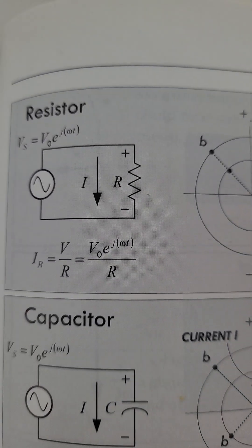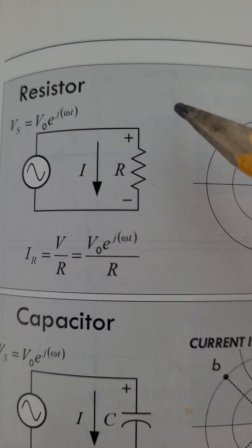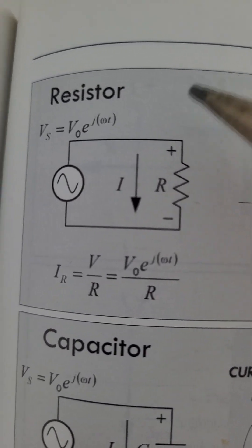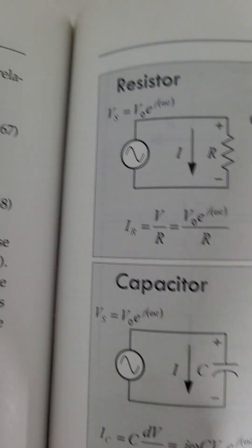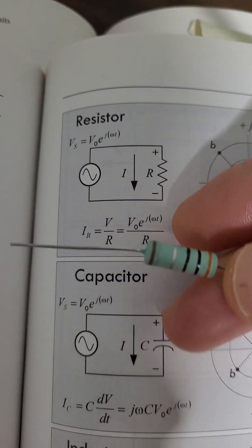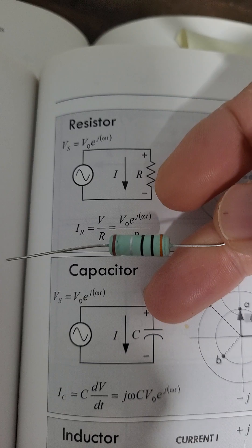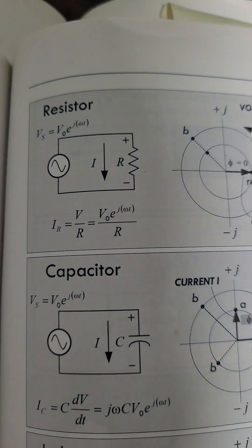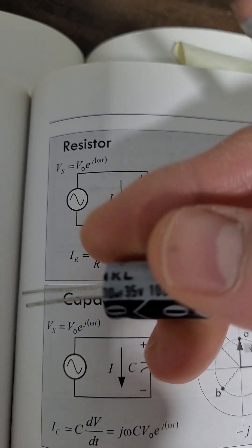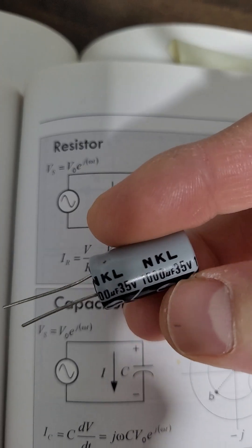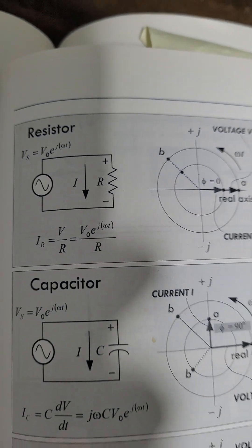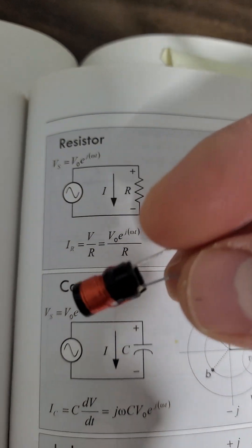Hello, my name is Firas Faham and today we will be talking about the meaning of leading and lagging. Leading and lagging refer to the voltages and currents inside elements. For example, a resistor is a passive element, while a capacitor is a reactive element — not resistive — because it stores energy. The inductor is also reactive.